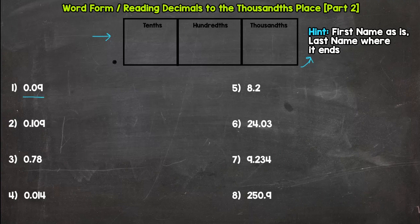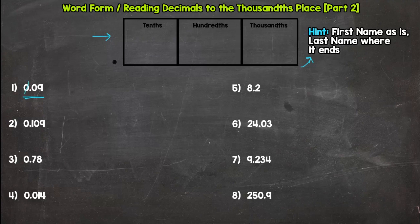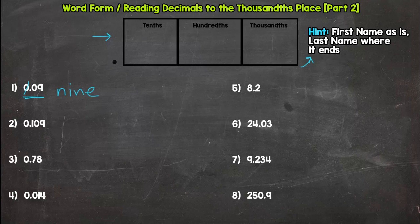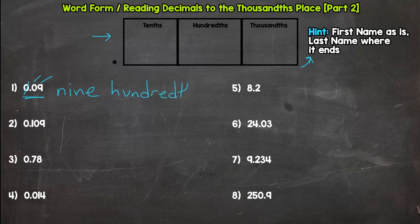So let's start with number one. And remember, first name, as is, last name, where it ends. So we don't have any holes, so we don't need to mention that. Read the number as is. Nine. All right, last name, wherever it ends. And it ends in the tenths, hundredths, ends in the hundredths. So here we go. Nine hundredths. Done with that one.